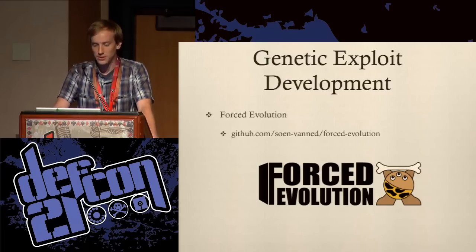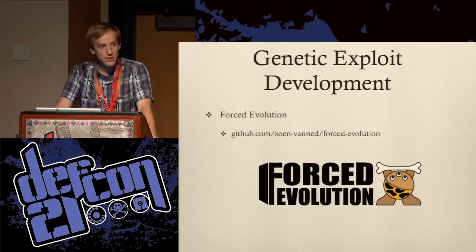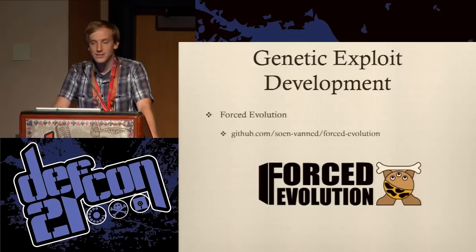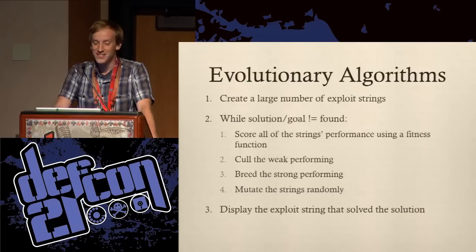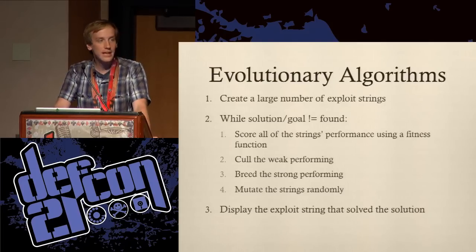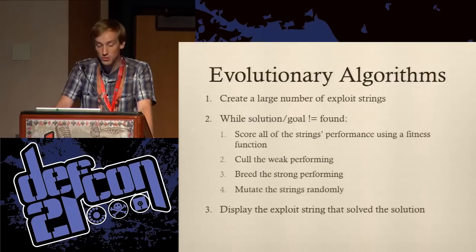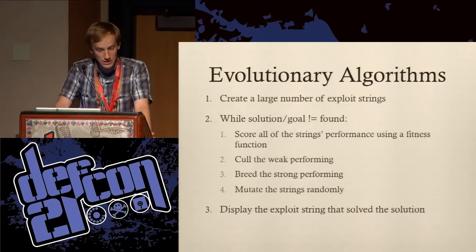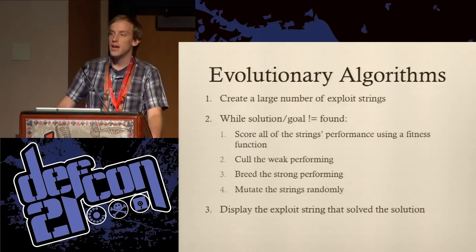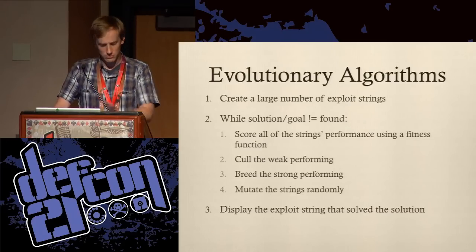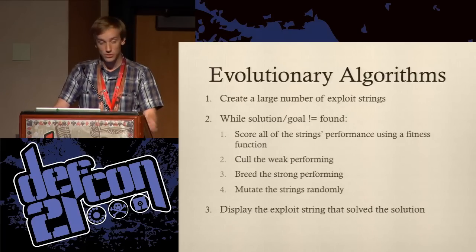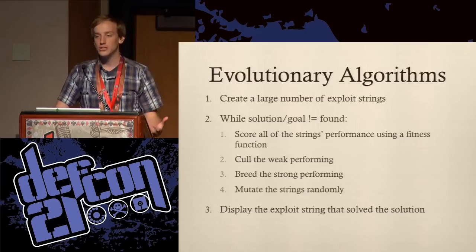The tool I wrote for this talk is called Forced Evolution. It takes the concept of using genetics to write exploits so I don't have to do it myself — it's the inner lazy programmer. A genetic algorithm essentially creates a large number of things — in this case, exploit strings — and looks for a certain solution. You score all the strings' performance using some sort of fitness function, and in our case there is a way of determining, using numbers, whether one injection string is better than the previous one.